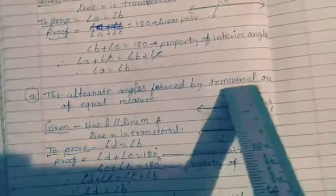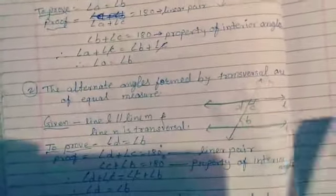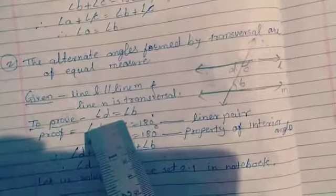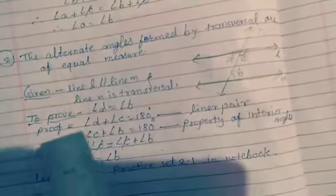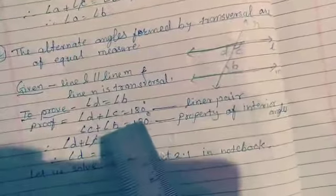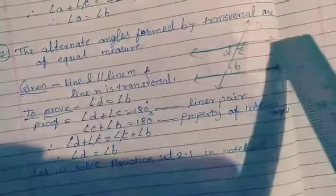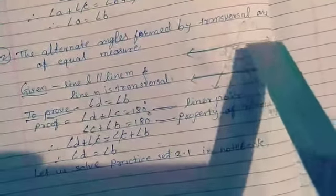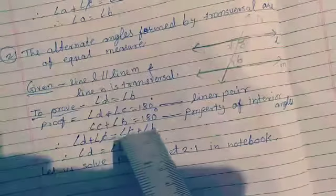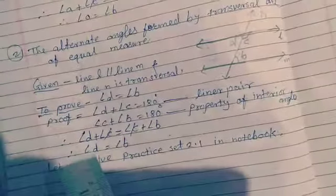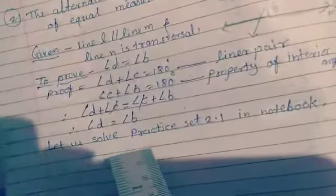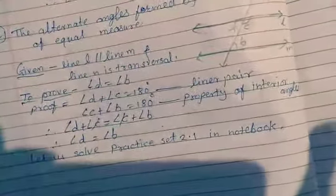Number 2: The alternate angles formed by the transversal are of equal measure. Line L and M are parallel lines and N is their transversal. To prove: angle D is equal to angle B. Angle D plus C is equal to 180 because they form a linear pair, and C plus B is equal to 180 by the property of interior angles. So D plus C equals C plus B, C gets cancelled, and angle D is equal to angle B. Now let us solve practice exercise 2.1 in the notebook. Thank you.